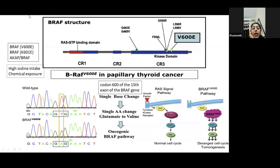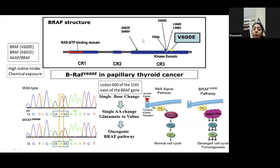BRAF is commonly involved in papillary thyroid cancer and is a 5-mark topic in MCH exams. BRAF is a proto-oncogene. Any gene has exons containing multiple codons. The V600E mutation refers to codon 600 in exon 15 — a single base point mutation where glutamine changes to valine. Because of this single change, the normal pathway is disrupted, causing the cell to act in an exaggerated manner, amplifying the MAPK pathway many times over.